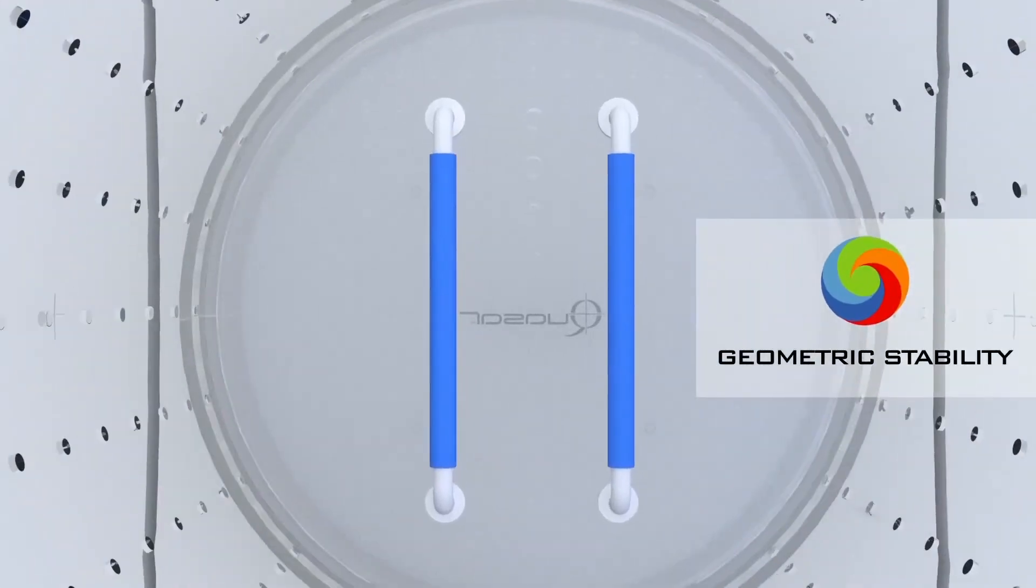Integrated mineral oil thermal expansion tubes made of blue fluorosilicon rubber provide internal pressure relief to ensure geometric stability.